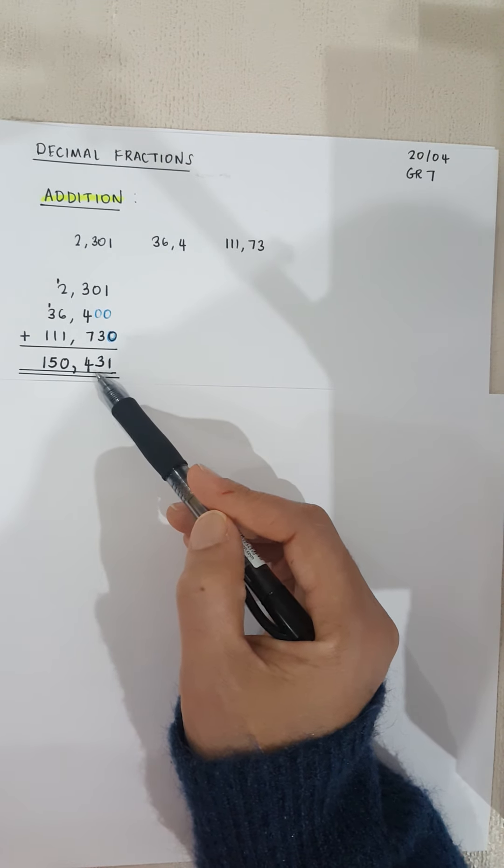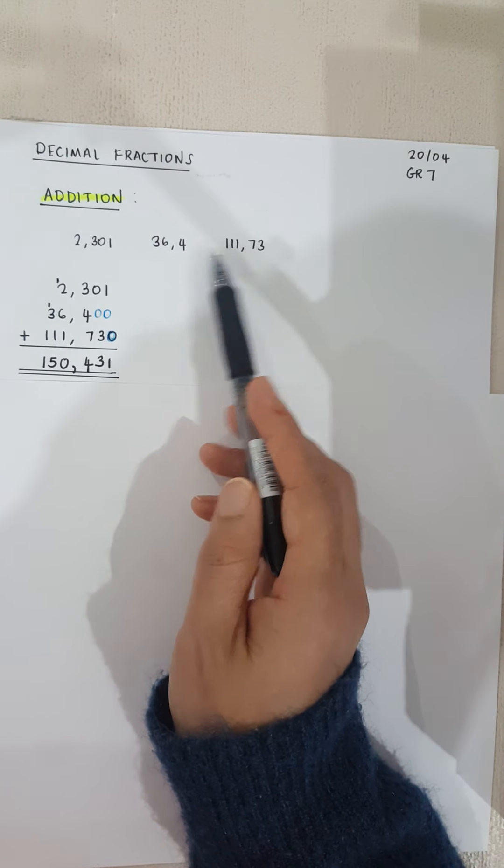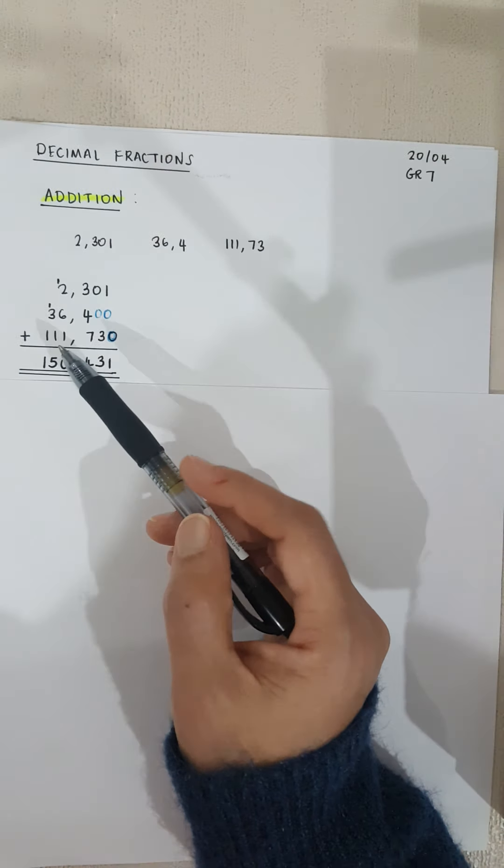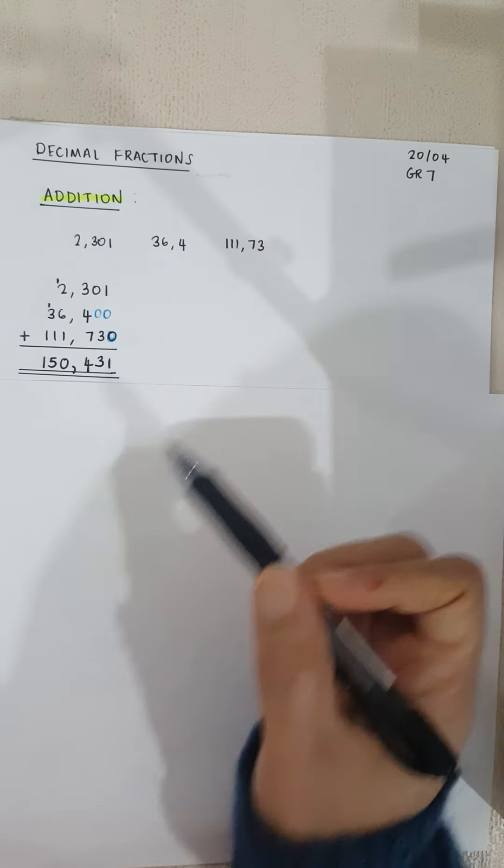Our answer is 150.431. So all I've done is I've taken my three decimal fractions, I've written them down in a column method, and I've added them all in a row and brought my comma down. Nothing changes.